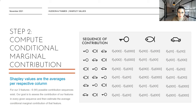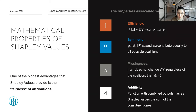So far the process is only two steps — pretty easy. But what makes it so special? What's special about Shapley values is the fairness of the attributions we get. By fairness, we mean these attributions possess four properties. First, efficiency — basically the quality assurance of our attributions and evaluations. Second, symmetry — meaning if the contributions are equal for two features, then those two features contribute equally to all possible coalitions. The third property is missingness — meaning if feature i does not change our outcome regardless of the coalition, then its contribution is zero. And fourth, additivity — meaning a function with combined outputs has Shapley values that are the sum of the constituent ones.